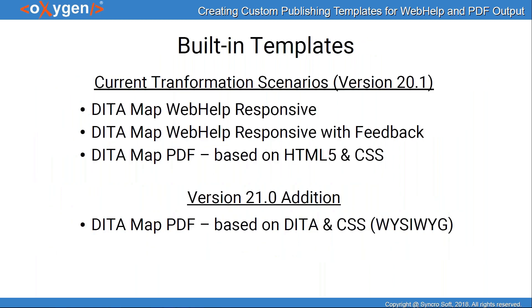Now I'll introduce you to the built-in templates. Currently there are three transformation scenarios that include the templates feature: the two DITA map Web Help Responsive transformations and the DITA map PDF transformation based on HTML5 and CSS. Note that in version 21, which will be released next spring, we will add the publishing templates feature to another PDF transformation.